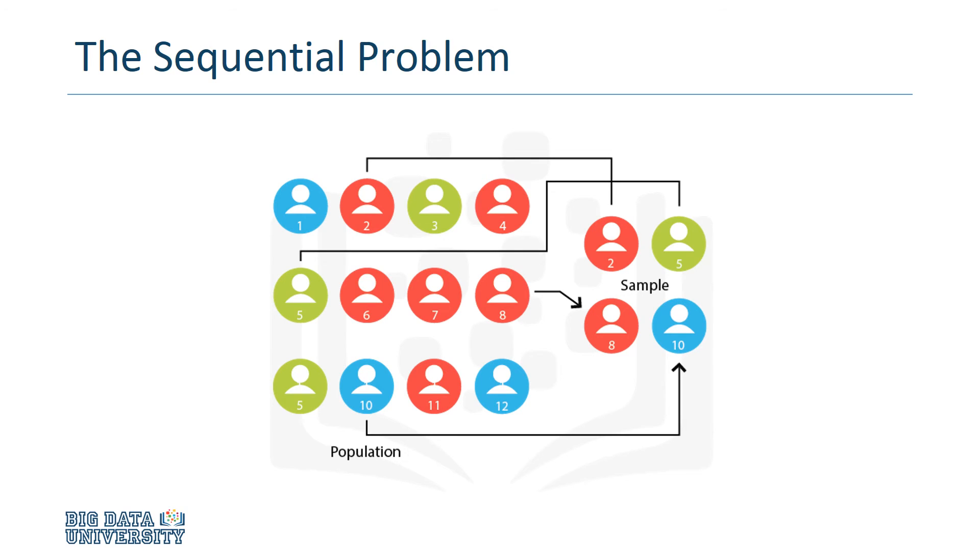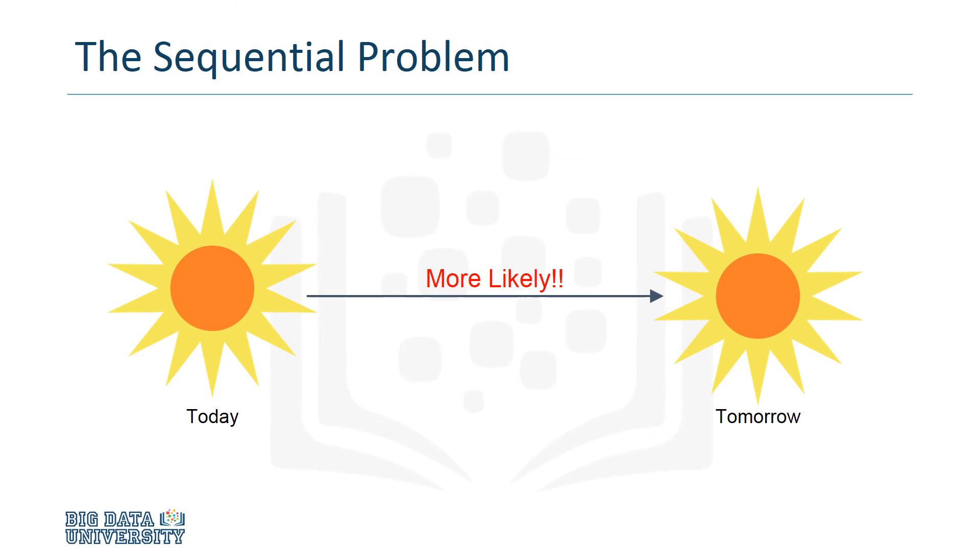To see how this can be a limitation, let's go back to the weather example. It could be the case that the prior day's weather has some influence on the weather in the following days. So for example, if it's sunny today, it may be more likely to be sunny tomorrow. A traditional neural network model could not use this information, so we'd have to turn to a different type of model, like a recurrent net.